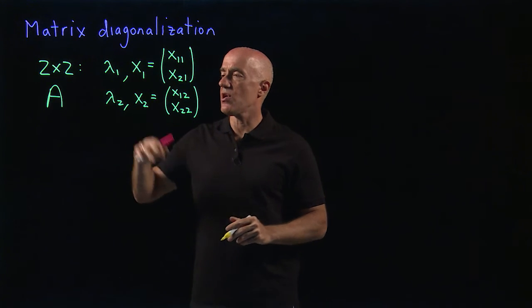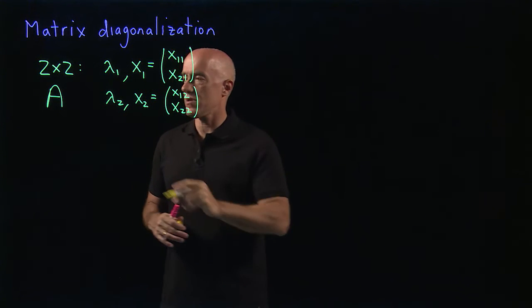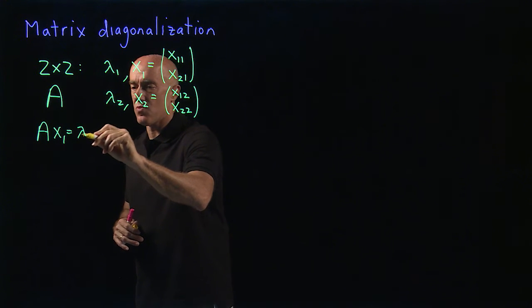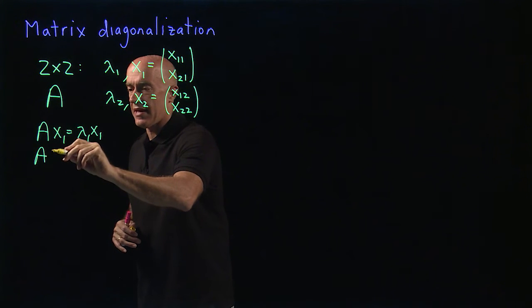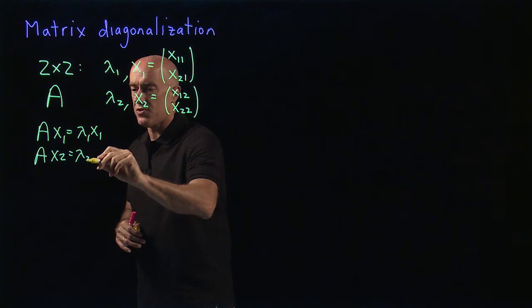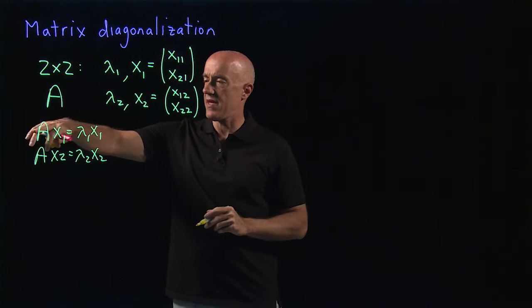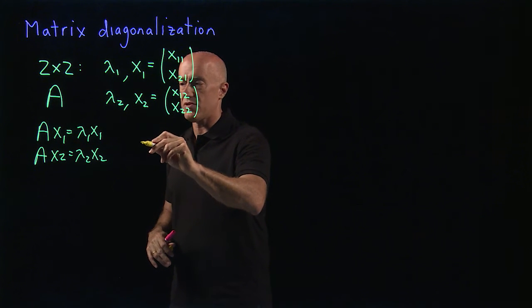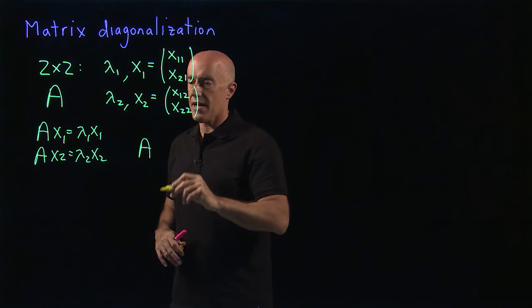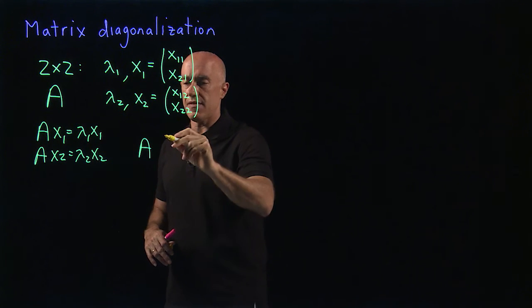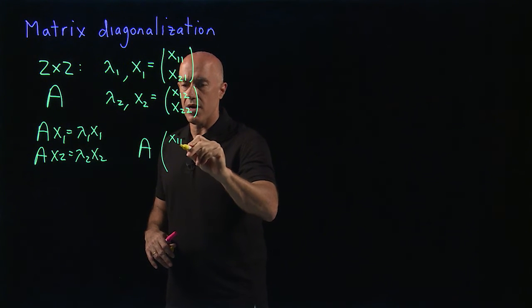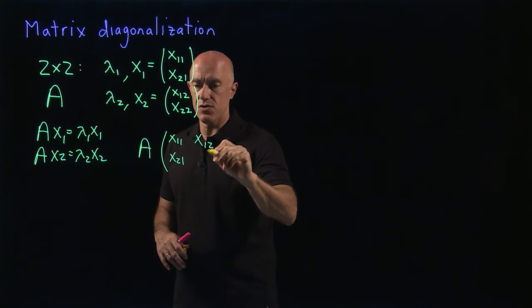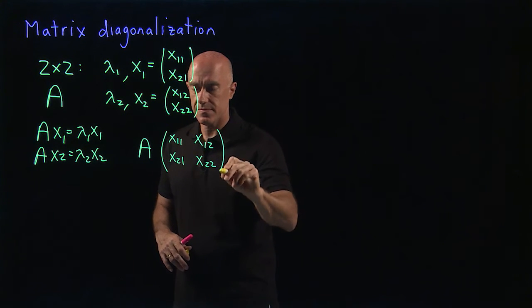We know the eigenvalue problem: A x1 equals lambda 1 x1, and A x2 equals lambda 2 x2. But rather than writing each as a matrix times a vector, we can write this as a matrix times a matrix. So I want to write this as A times the matrix with x1 in the first column — x11, x21 — and x2 in the second column — x12, x22.